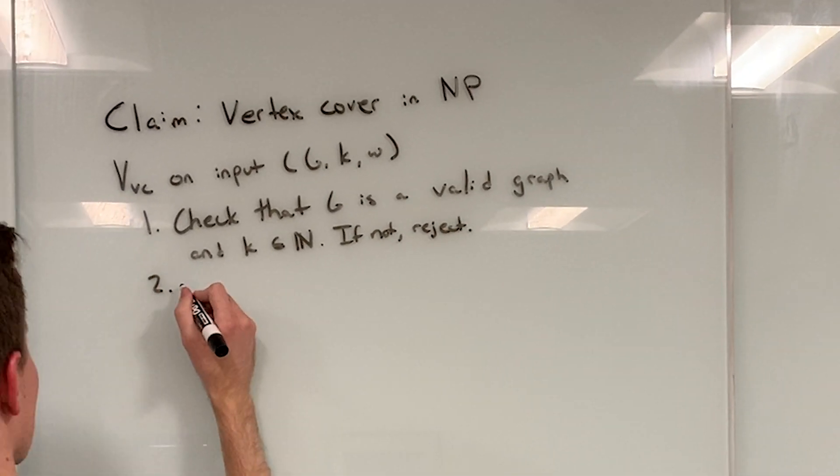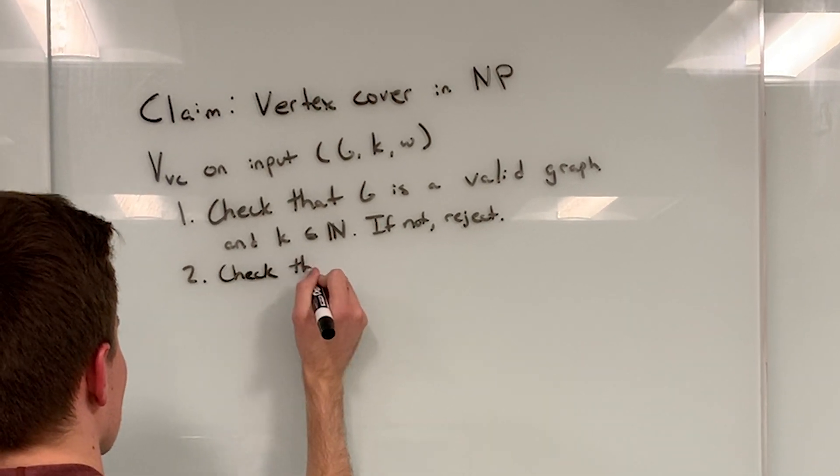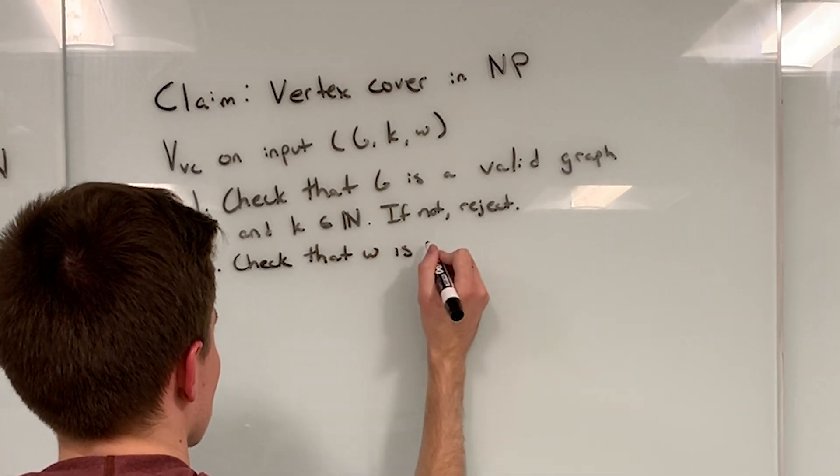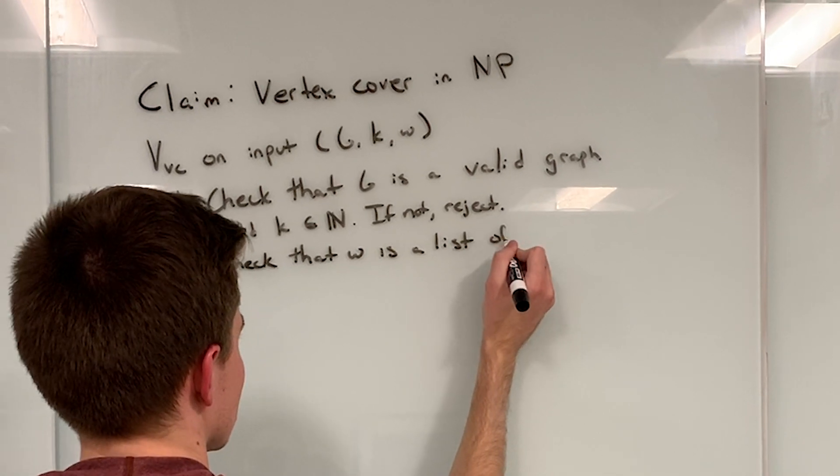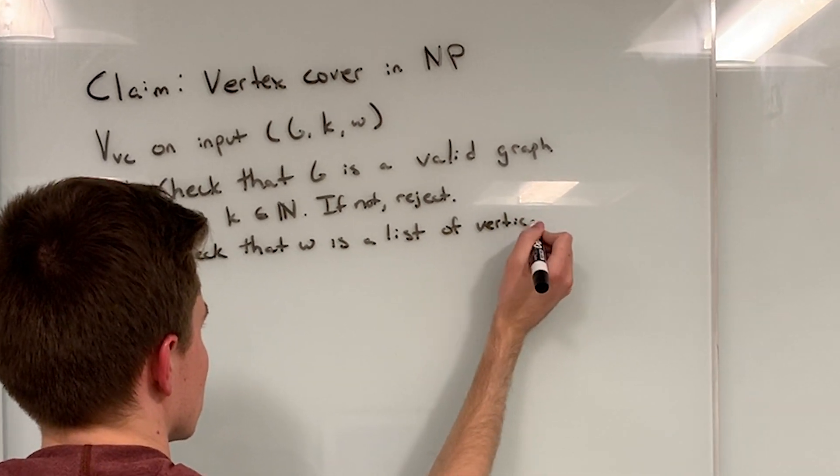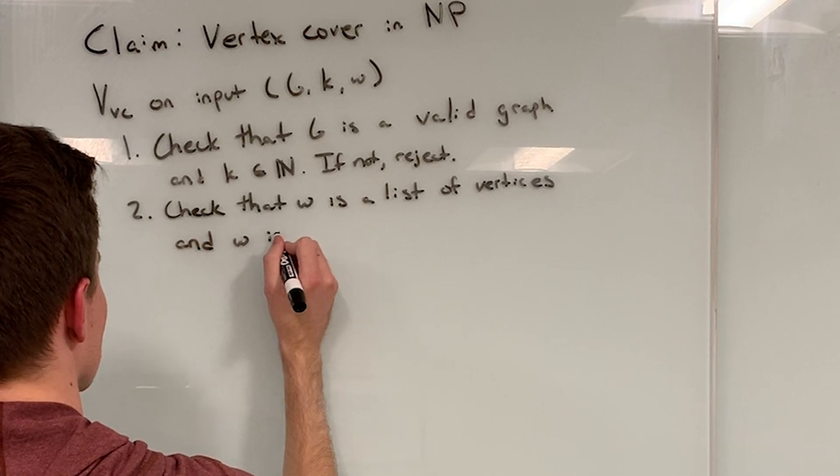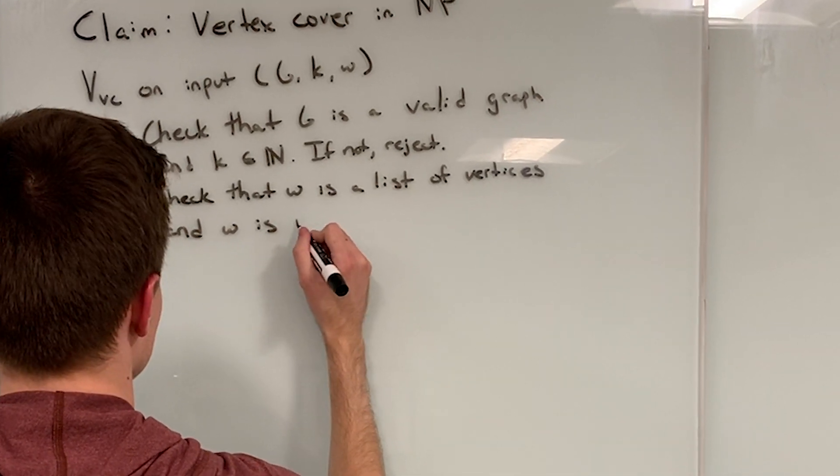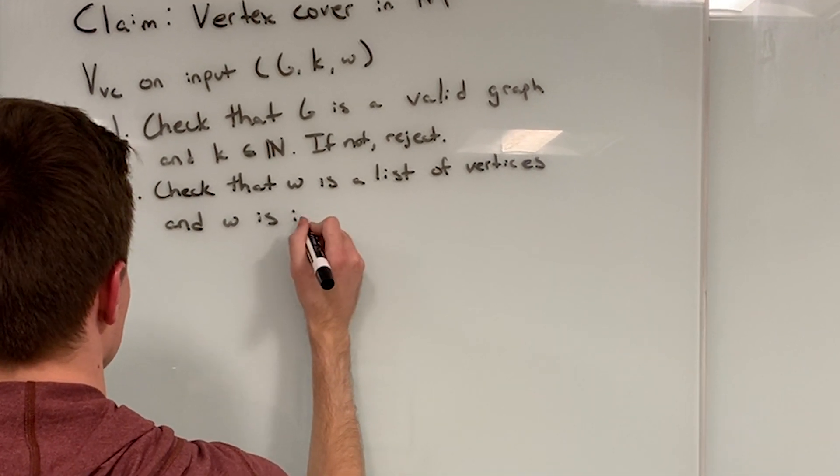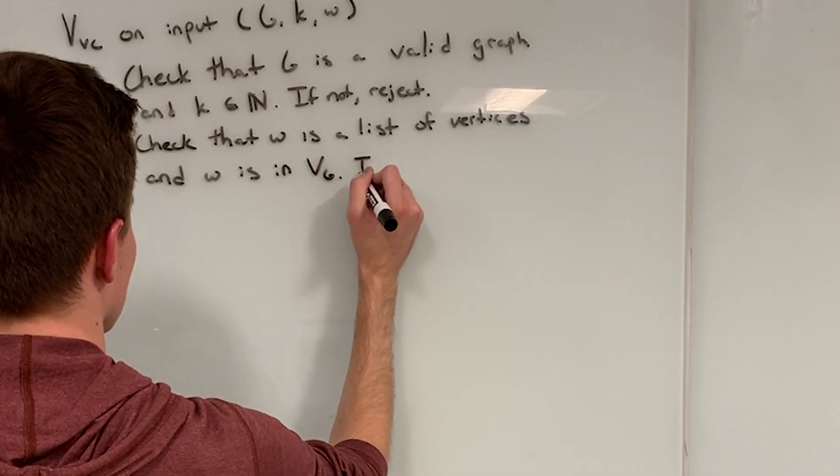Step 1 checks that our verifier is valid and that K is a natural number. If neither of these cases are true, we reject. Step 2 checks that W is a list of vertices. Specifically, W is a covering of the graph G. If these are not the case, we reject.